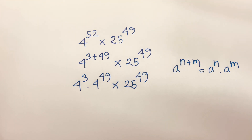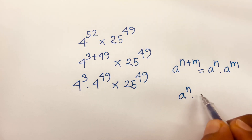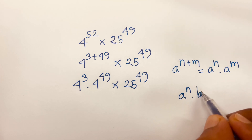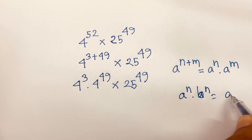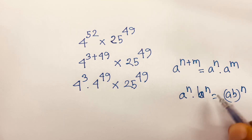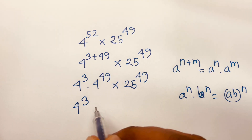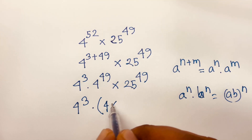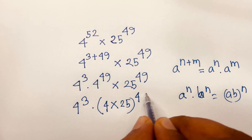We also know that a to the power n times b to the power n is equal to (ab) to the power n. Applying this rule, we get 4 to the power 3 times, and then (4 times 25) bracket to the power 49.